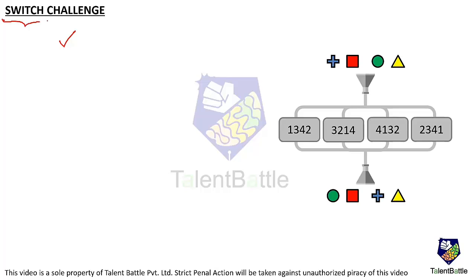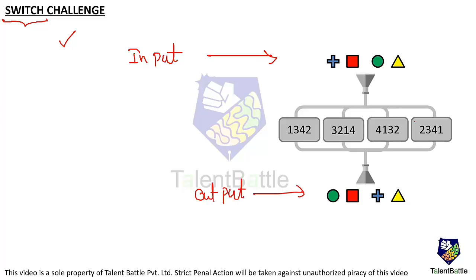Observe this particular word - switch. They are going to switch the positions of the input. Input is nothing but the given data for you at the start. So they will switch the positions of this particular input to get this particular output. We need to identify what function is performed to get this output. The function might be either one-three-four-two, or three-two-one-four, or four-one-three-two, or two-three-one-four.